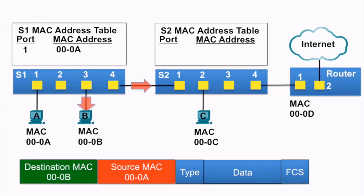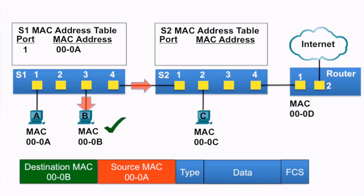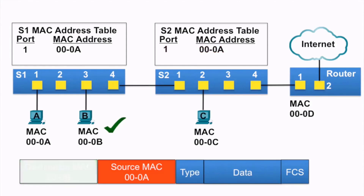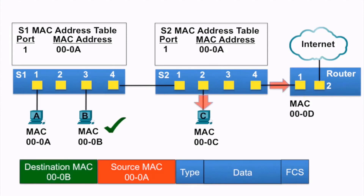PCB receives the ethernet frame, examines the destination MAC address against its own MAC address, and notices that there is a match and receives the rest of the frame. The ethernet frame continues to be forwarded to switch S2. Switch S2 examines the source MAC address of the frame, notices it is not in its MAC address table, so it adds the MAC address and the incoming port to its MAC address table. Next, S2 examines the destination MAC address, notices it is not in its MAC address table, so it floods it out all ports.